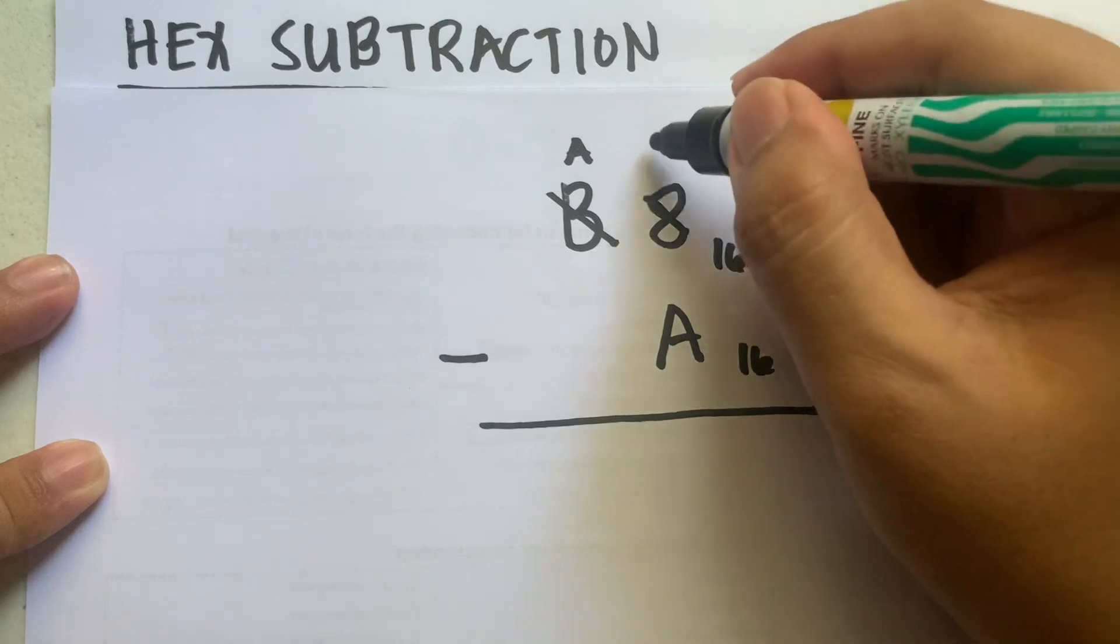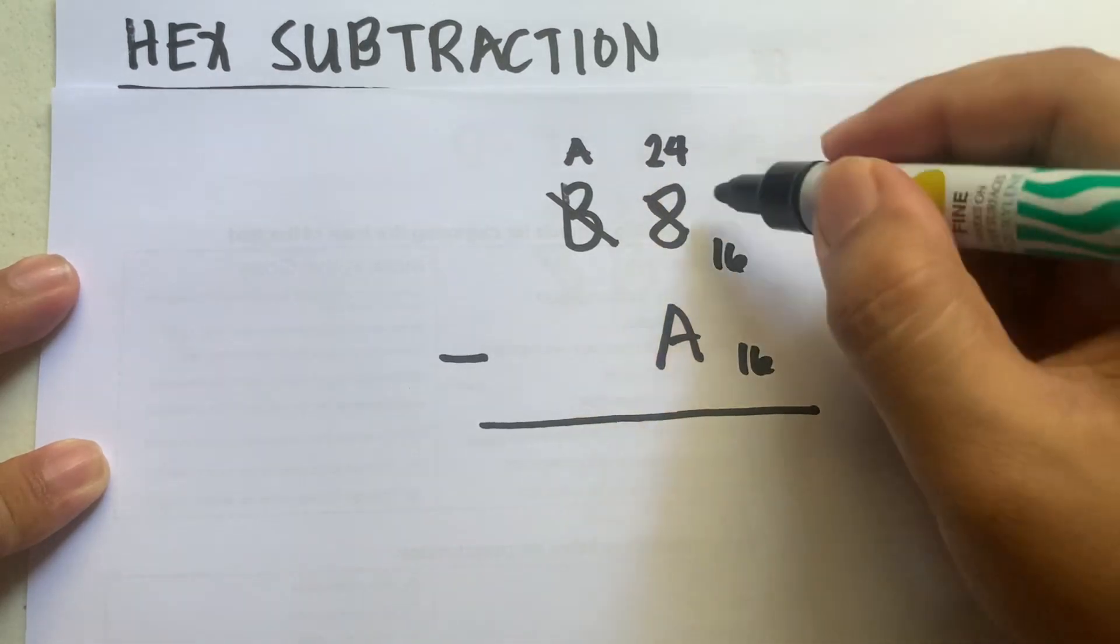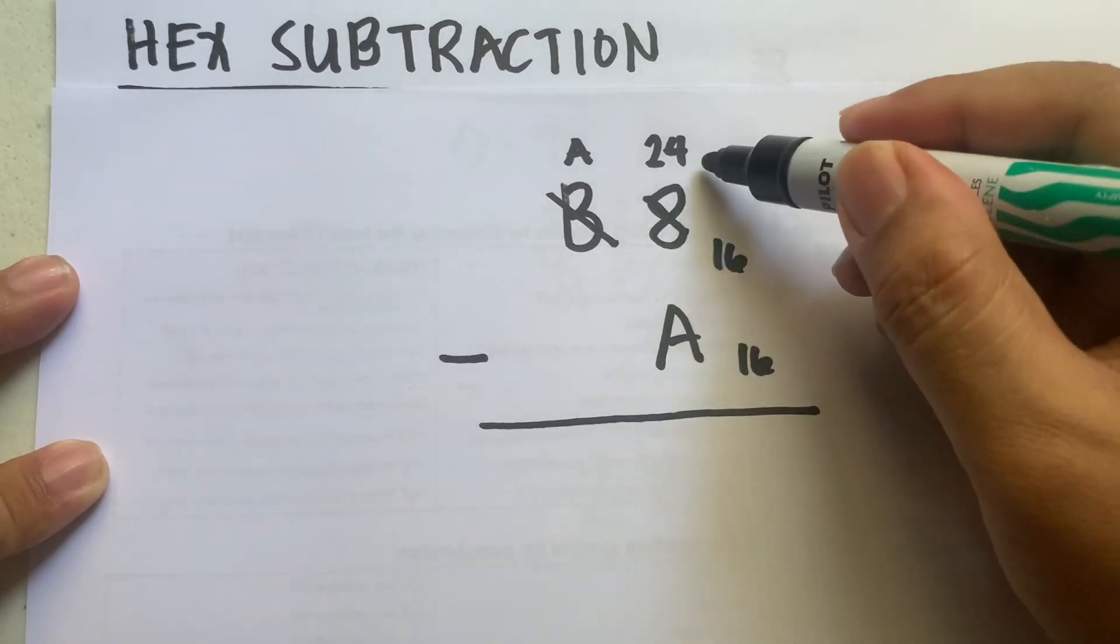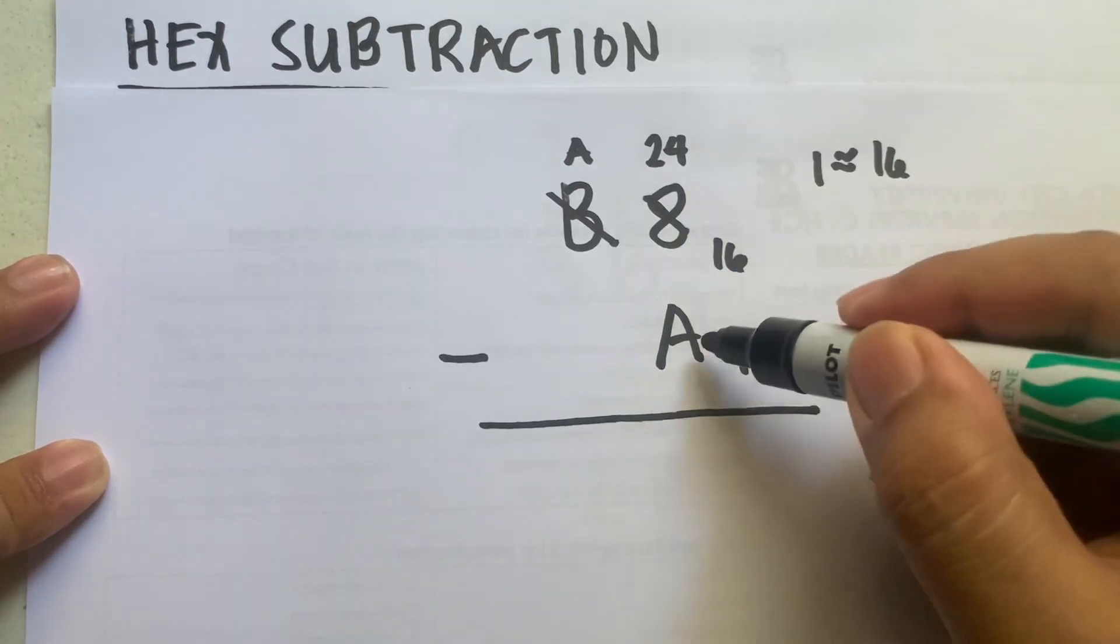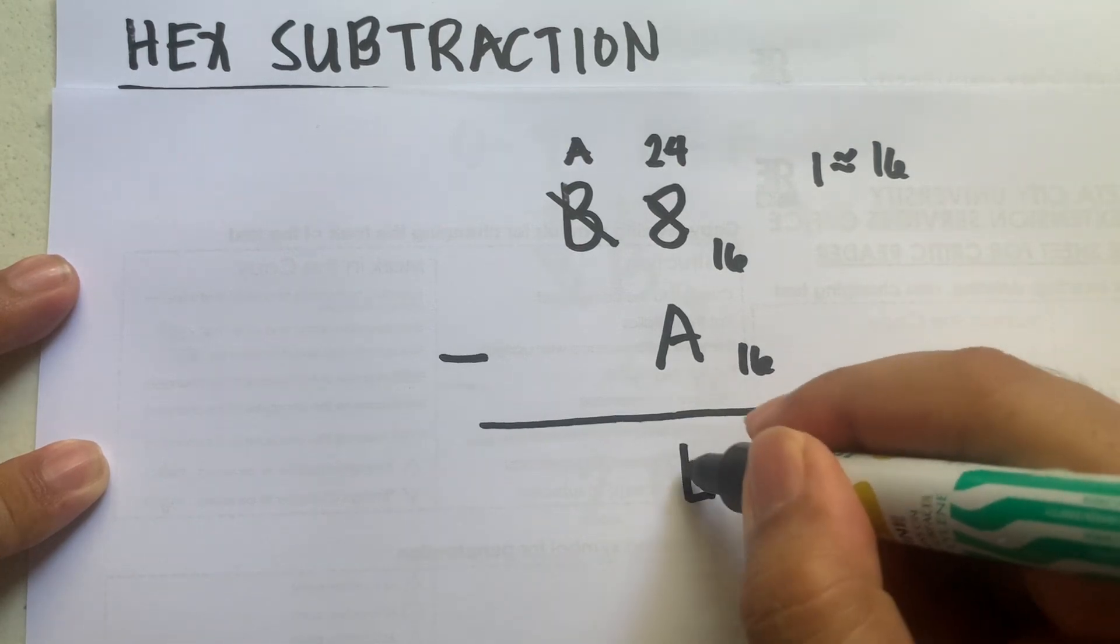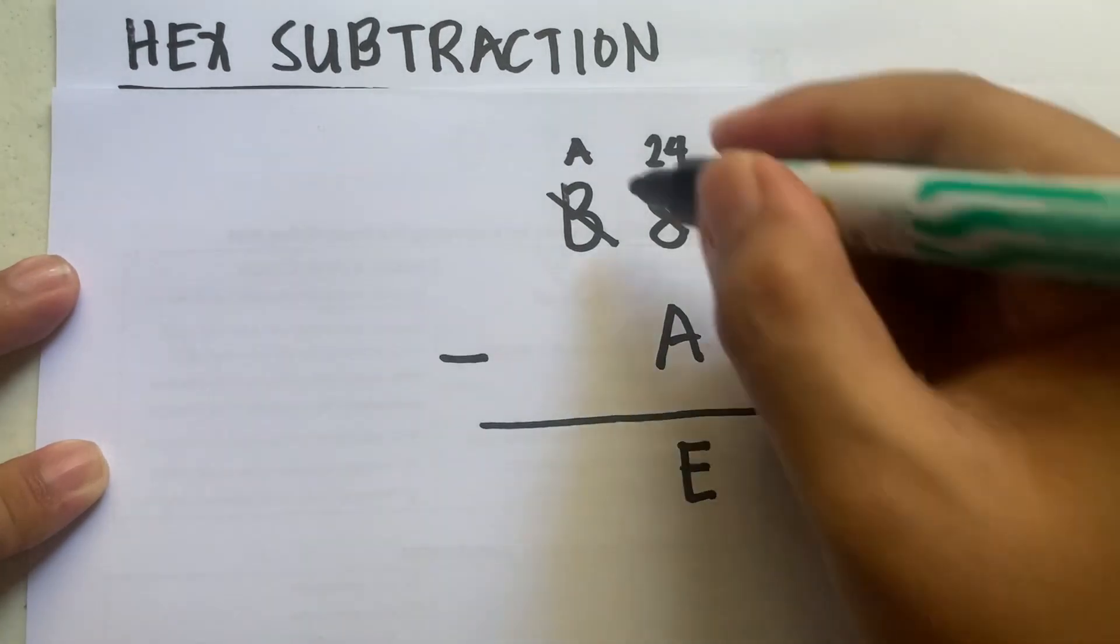becomes 24. Why 24? Because each one borrowed is equivalent to 16, so we have 8 plus 16, which equals 24. 24 minus A, which is 10, equals 14. But 14 is represented by the letter E. Then we bring down A, so the answer is AE.